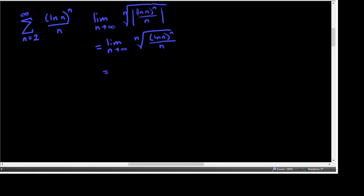This is going to become the nth root of the numerator divided by the nth root of the denominator. That simplifies to be the natural log of n over the nth root of n.